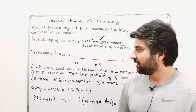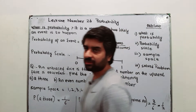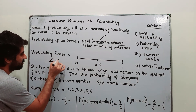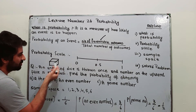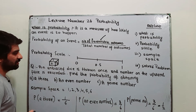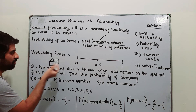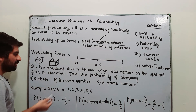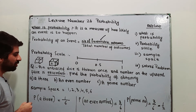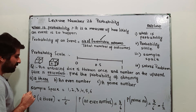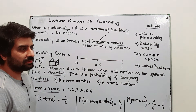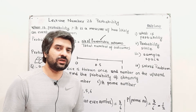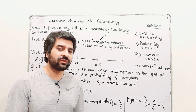Now the concept of sample space: an unbiased die is thrown once. The die has faces one, two, three, four, five, and six, and the number on the upward face is recorded. Find the probability of obtaining a three. First of all, write down your sample space. Sample space is basically a collection of all the possible outcomes — for example, if you throw a die, the result may be one, two, three, four, five, or six on top.